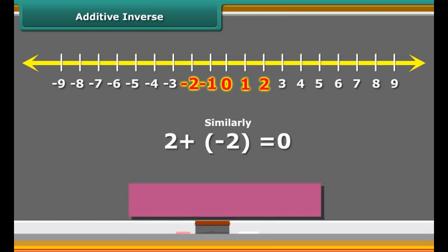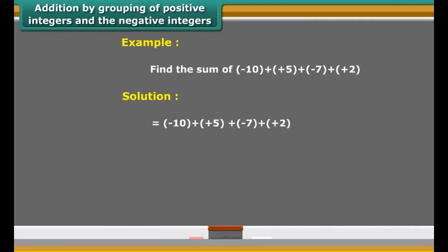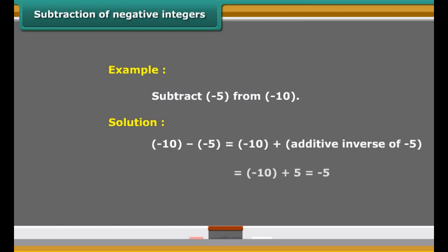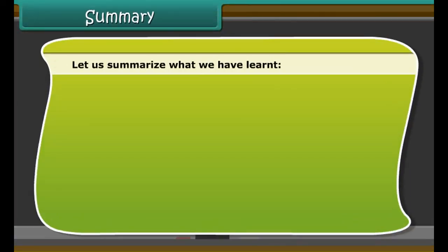Suppose the ant walks three points from 0 to the right side and walks back three points. Where does it reach ultimately? As you can see, it will reach 0. Numbers such as 3 and minus 3, 2 and minus 2, when added to each other give the sum as 0. They are called additive inverse.